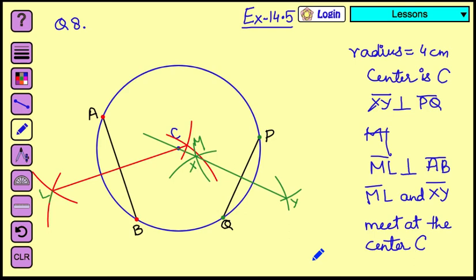So this is what the question was asking us to do. First it asked us to draw a circle of 4 cm. Then draw two chords on the circle of any length. Then we have to bisect those two chords. And then we have to check it out, where are these two chords meeting each other? So after drawing the perpendicular bisector of PQ and perpendicular bisector of AB, we saw that these two perpendicular bisectors are meeting at the center of the circle C.